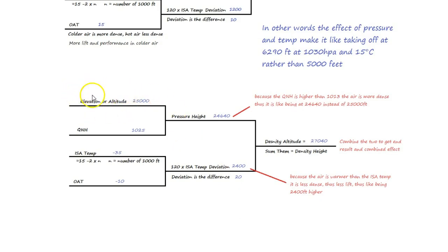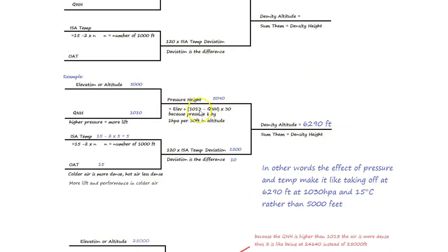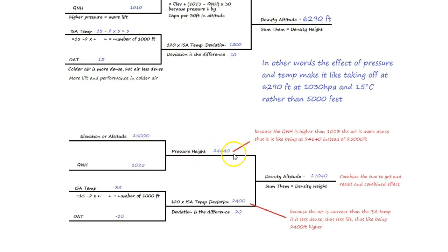Let me reinforce that with another example. If our altitude is 25,000 feet and our QNH is 1,025 - now 1,025 means the pressure is higher than normal, higher than 1,013, so the air is going to be more dense and there's going to be more lift available. Using this formula here to work out what is the effect - the effect is like we're flying at 24,640 feet. So even though we're flying at 25,000 feet, because the pressure is higher, we use this formula to work out the effective altitude.